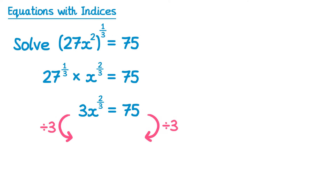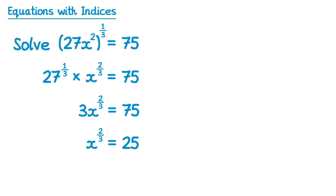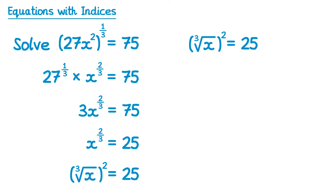We can now divide both sides by 3. That 3 disappears so we end up with x to the power two thirds, and 75 divided by 3 is 25. Now remember when we have fractional indices we can rewrite this as a root and then to a power, so this is the same as the cube root of x squared equals 25. To remove the squared we can square root both sides — the squared disappears on the left, and on the right we need to take both the positive and negative root, so we get plus or minus 5.